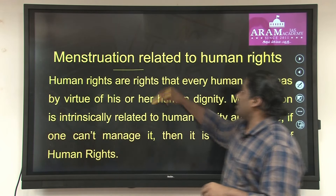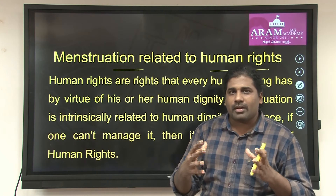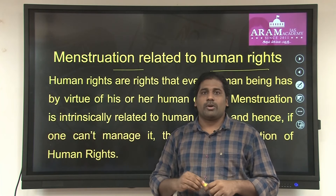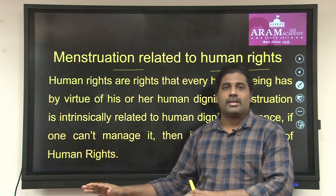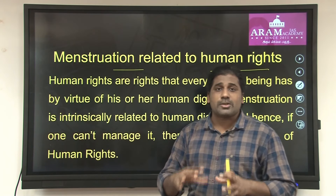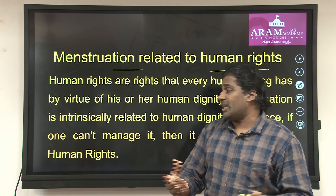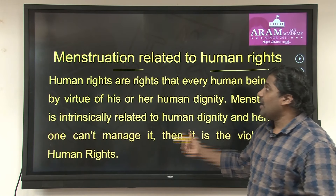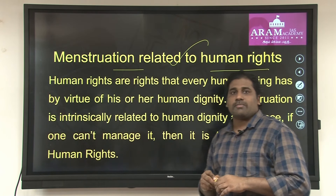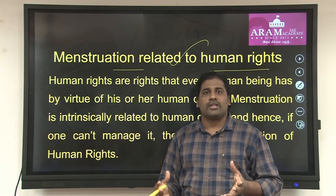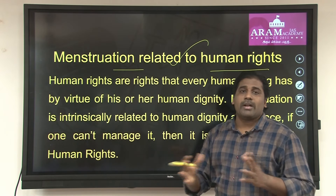We will understand menstruation in relation to human rights. You can enjoy your human rights, but in this case women are suffering because of period poverty, so the dignity of life is in question. It is a violation of human rights. Sociologists and other social thinkers consider period poverty and human rights to be linked.